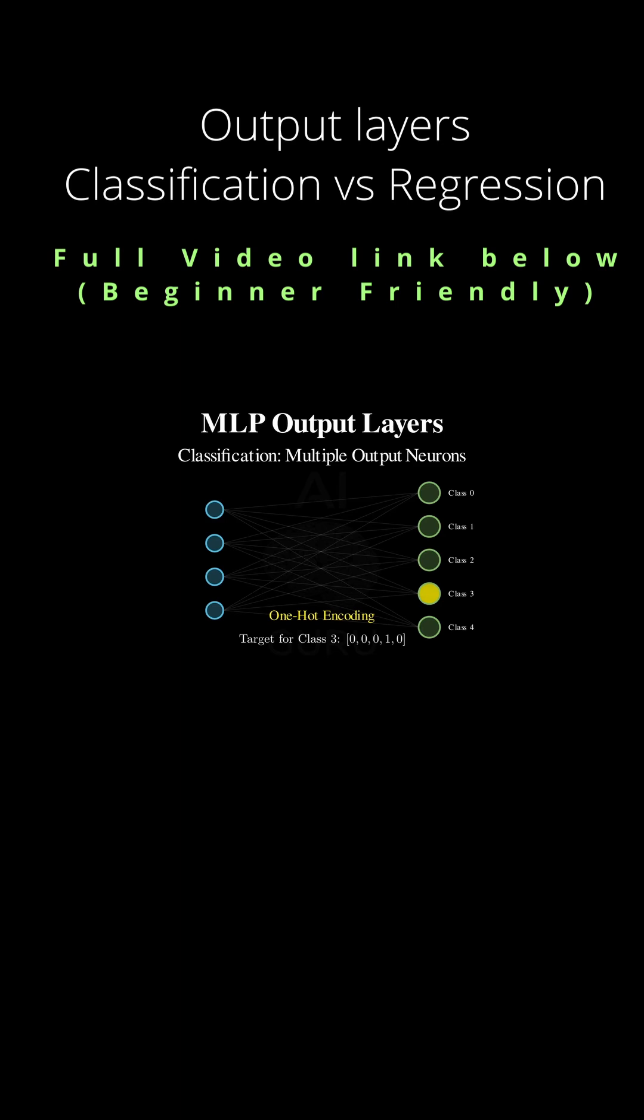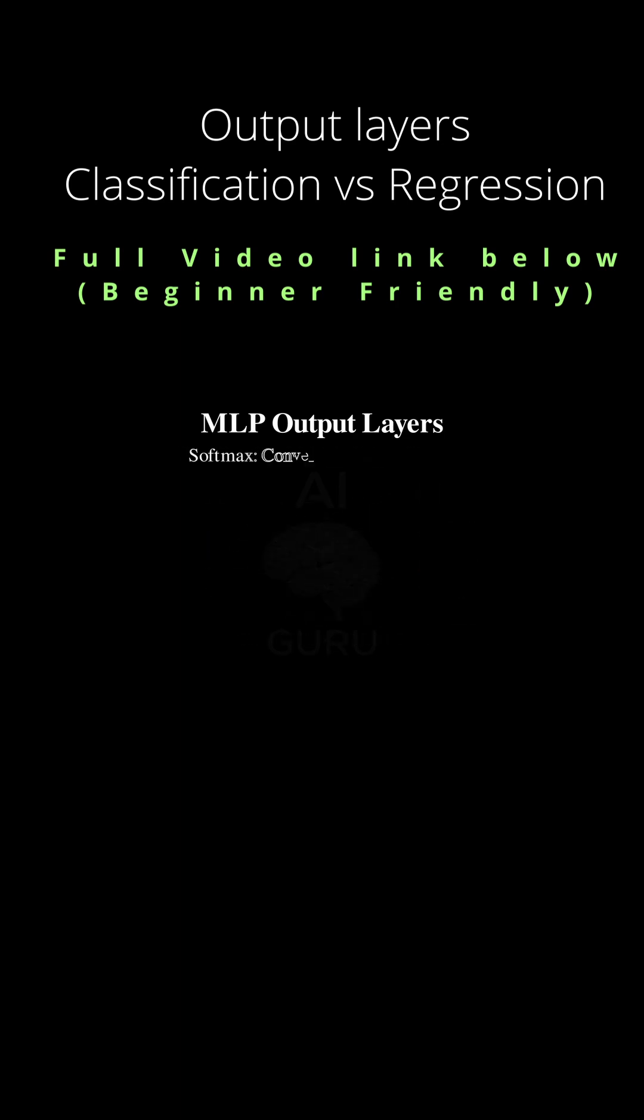Right, one-hot encoding is just a simple way to convert a category label, like class 3, into a binary vector. So the position for 3 has a 1, and everything else is 0. It gives the network a clear numerical target to aim for. It does. And when you have these multiple classification outputs, the standard choice for the activation function is the softmax activation function.